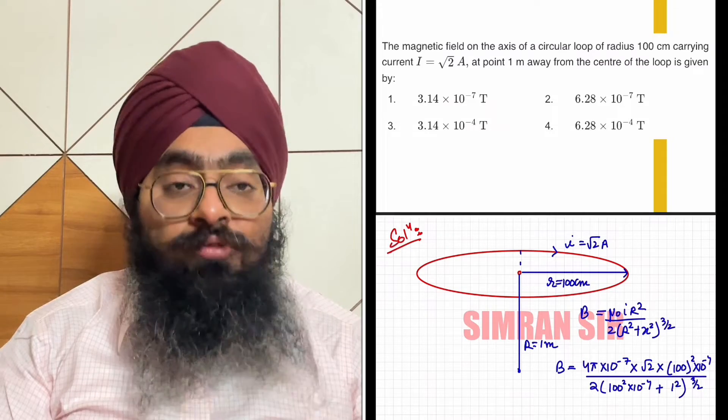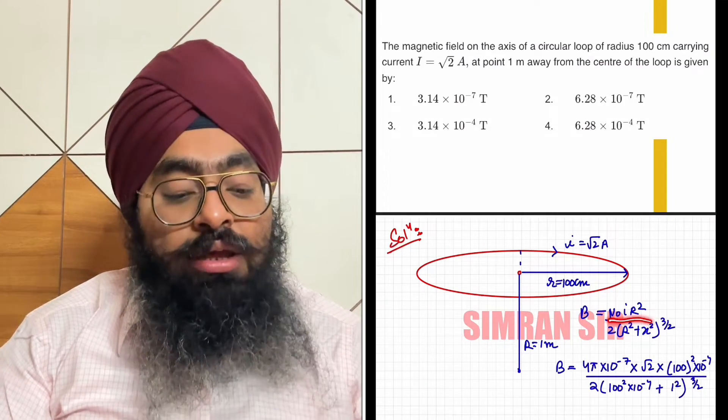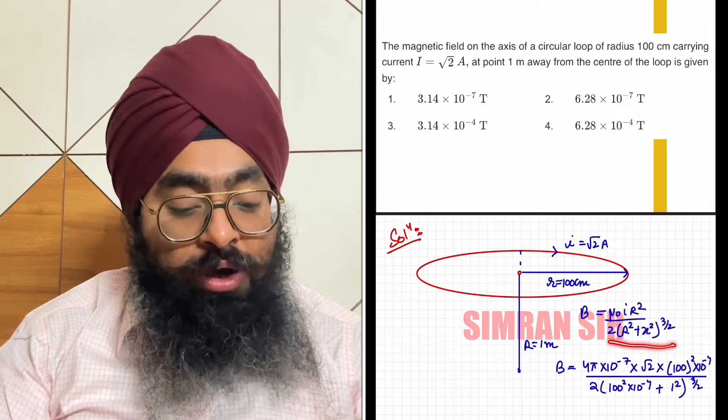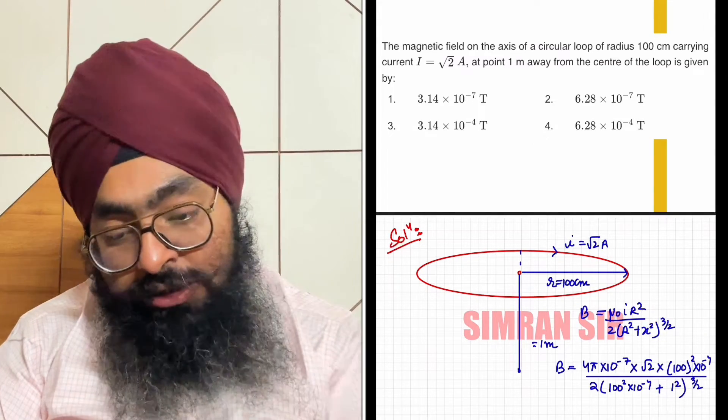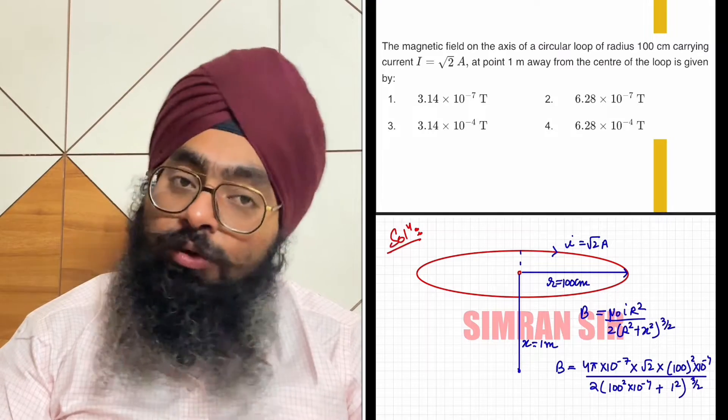So, the magnetic field due to a loop at its axial point is given by mu_0 * I * r^2 / (2 * (r^2 + x^2)^(3/2)). Here x is the distance from the center, which equals 1 meter.